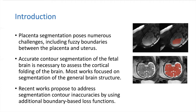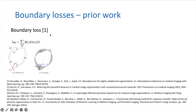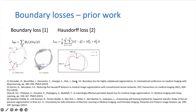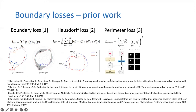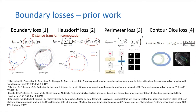Recent works propose to address segmentation contour inaccuracies by using additional boundary loss functions. The boundary loss calculates the area between the contours. The Hausdorff loss calculates the largest distance between the contours. The perimeter loss calculates the length of the contour, and the contour dice loss calculates the dice between the bands around the contours. For both the boundary loss and the Hausdorff loss, we need to calculate distance transform computation, which is pretty heavy.